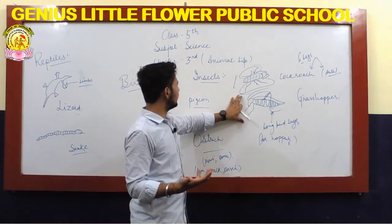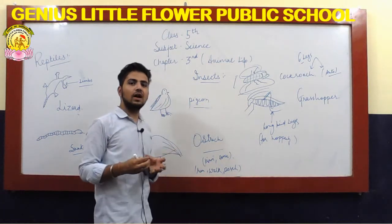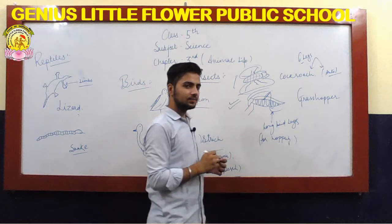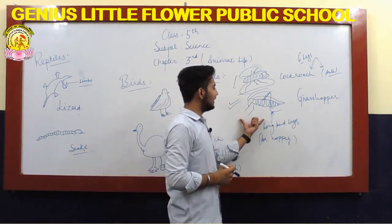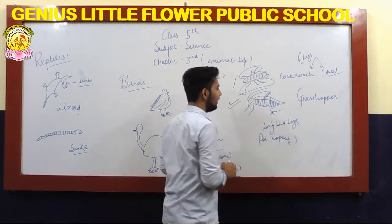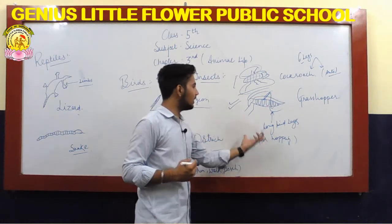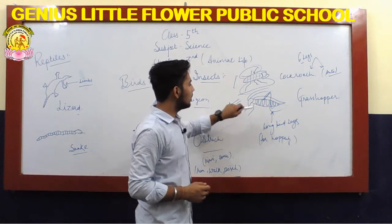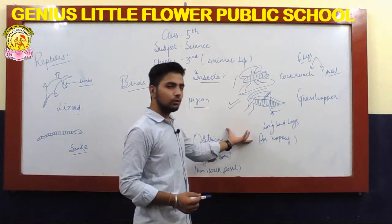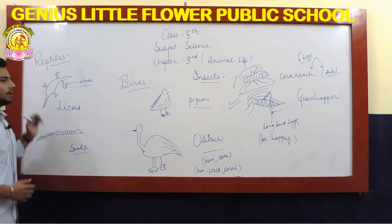Another kind of insect is the grasshopper. Grasshoppers have long hind legs, which are used for hopping and jumping on grass or other plants. So grasshoppers use their long hind legs for motion and jumping.